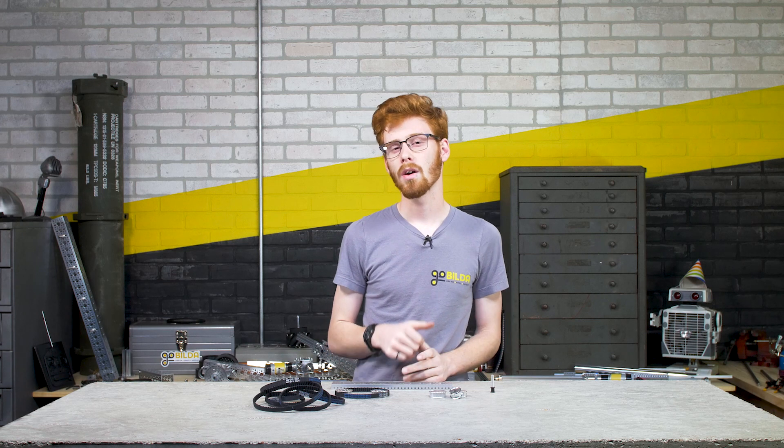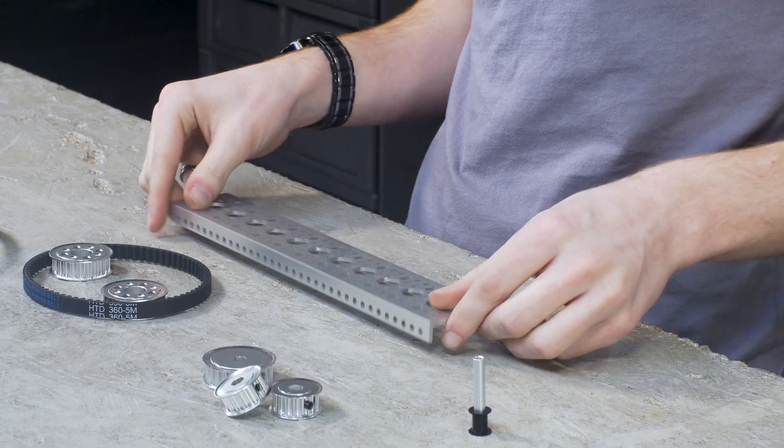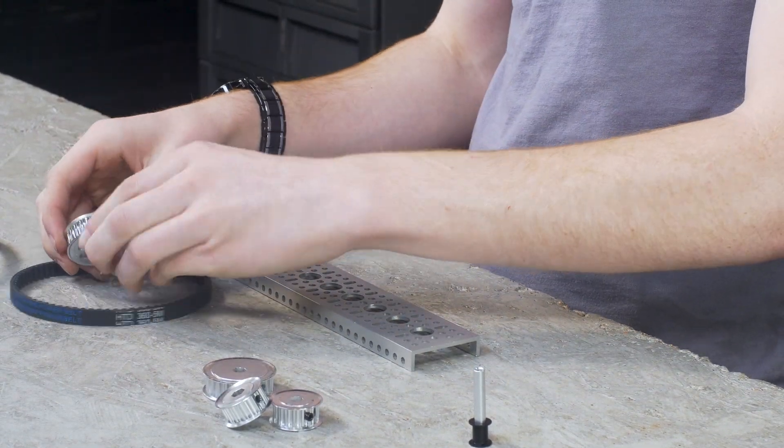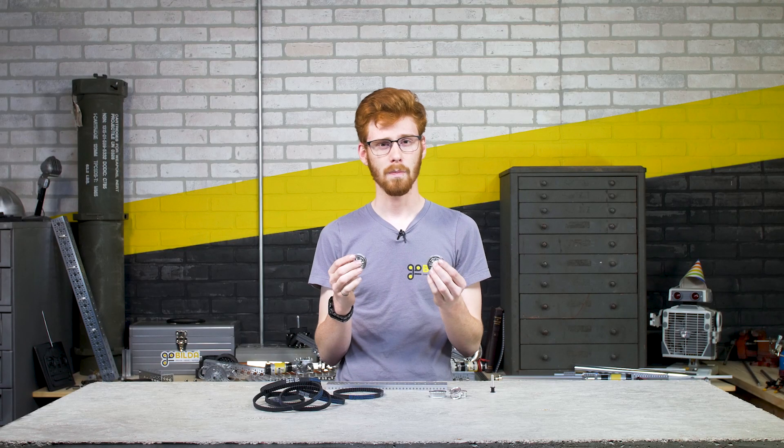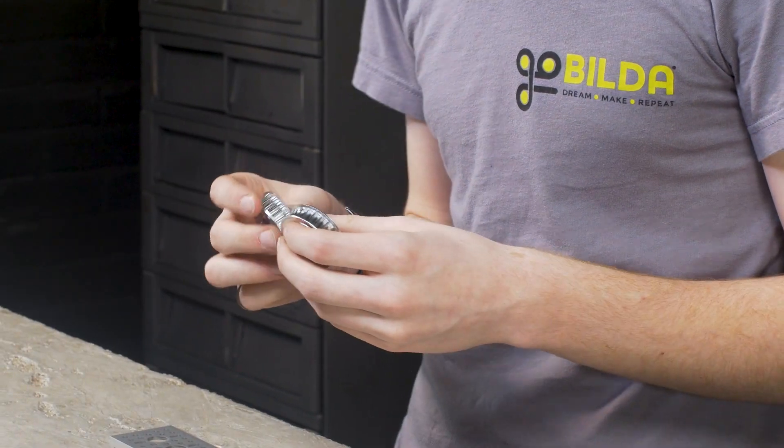Now when calculating what center distance you'll need to use, one to one ratios are always really easy because all you've got to do is take the center distance between your two pulleys, multiply that by two, and then divide it by the pitch of your belt. In this case we'll use five millimeter pitch.